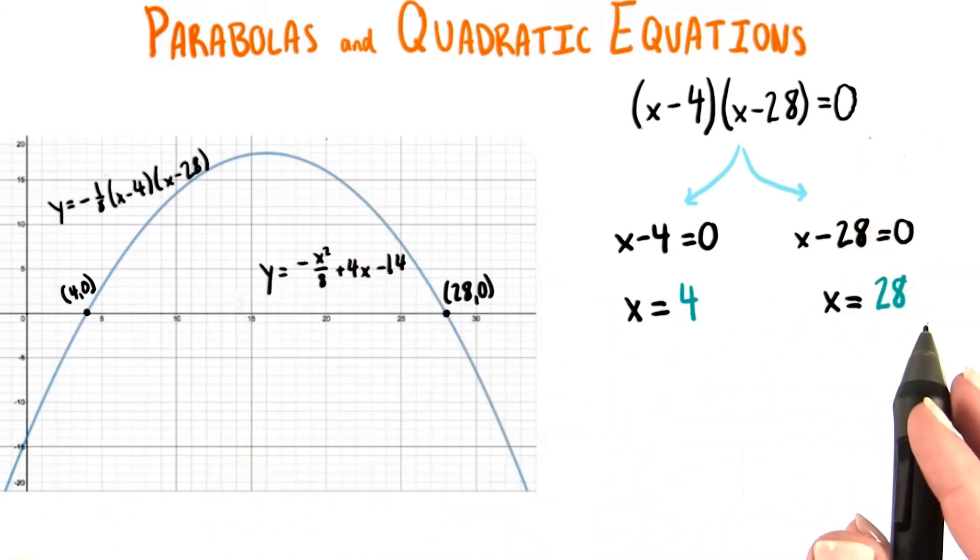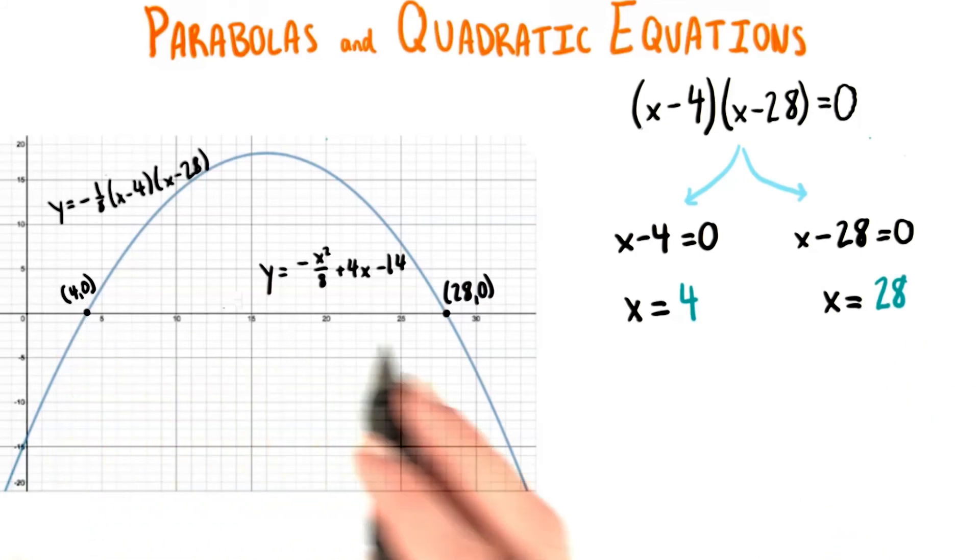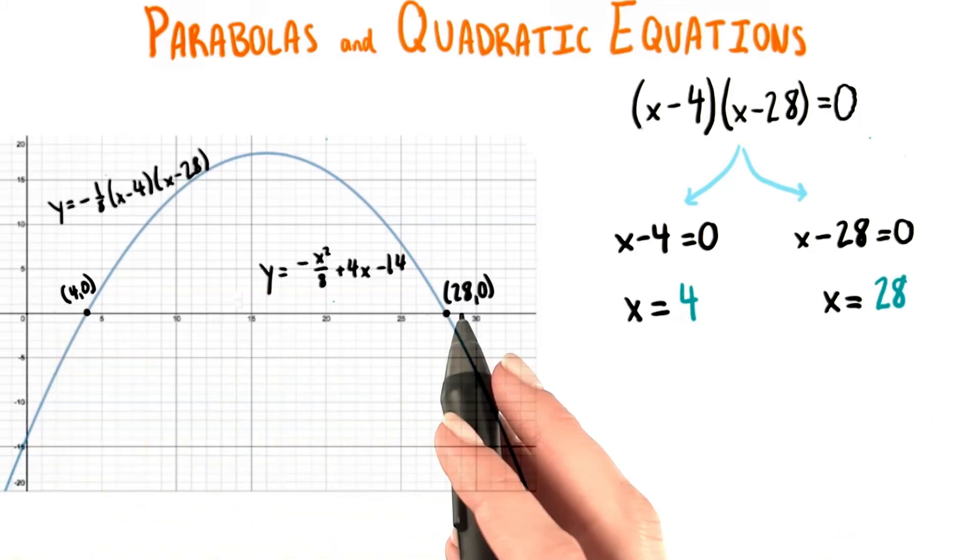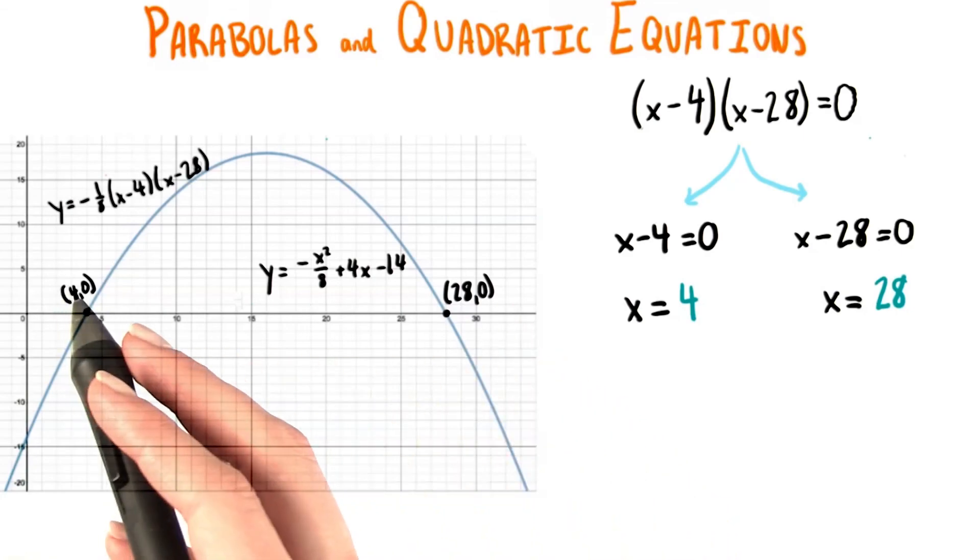So the reason that we have two answers here is because there are two points on the graph, 4, 0 and 28, 0, that have the same y value of 0.